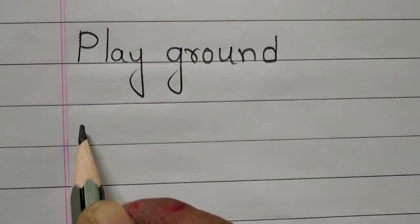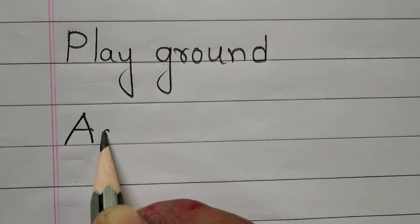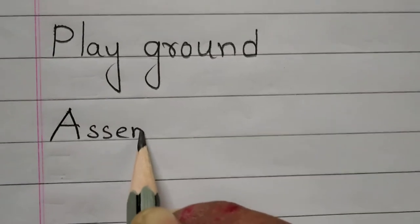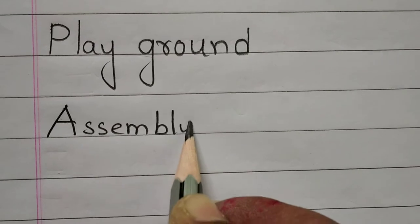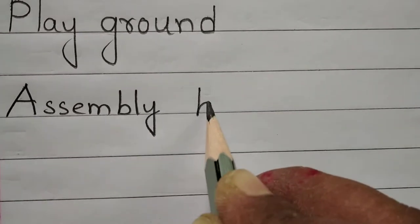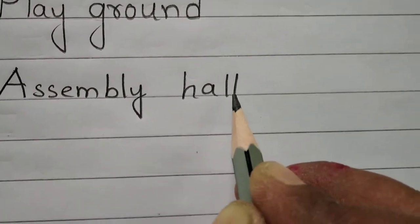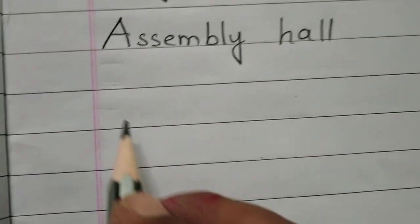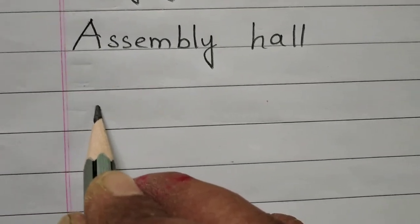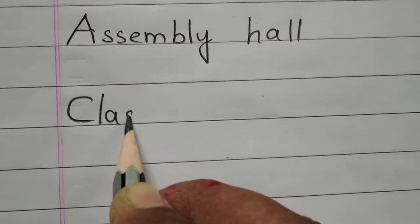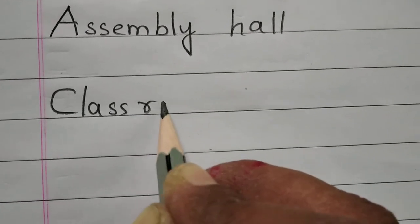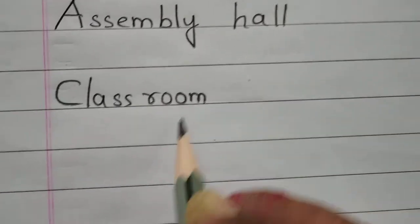And now third one, assembly hall. A-S-S-E-M-B-L-Y, assembly. H-A-L-L, hall, assembly hall. And write third one. Fourth one, C-L-A-S-S, class. R-O-O-M, classroom.